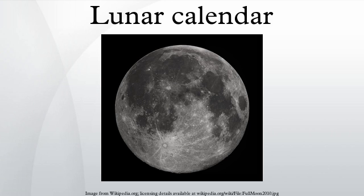The Islamic calendar is used mainly for religious purposes, but in Saudi Arabia it is the official calendar. Other lunar calendars often include extra months added occasionally to synchronize it with the solar calendar. The oldest known lunar calendar was found in Scotland, and it dates back to around 8000 BC.